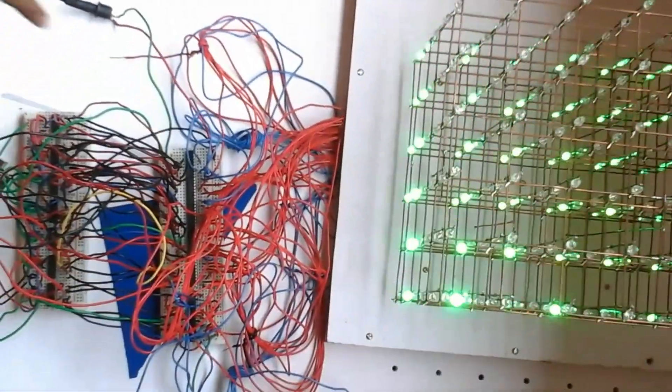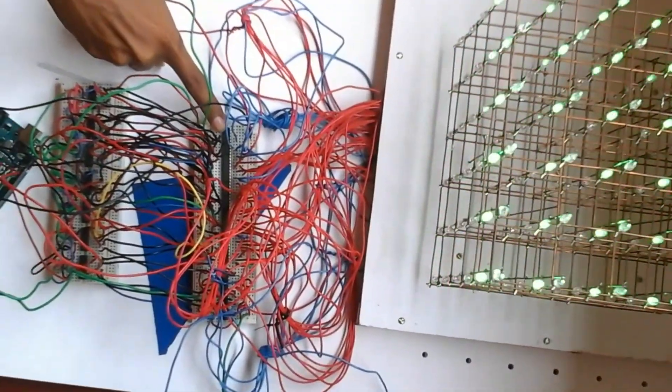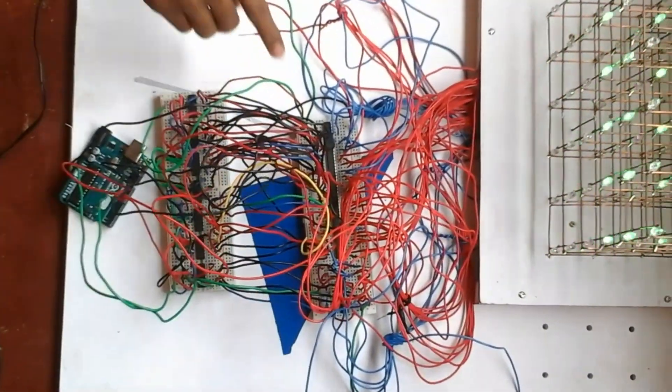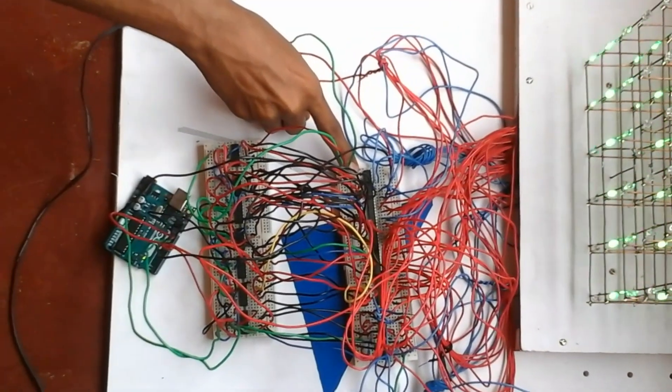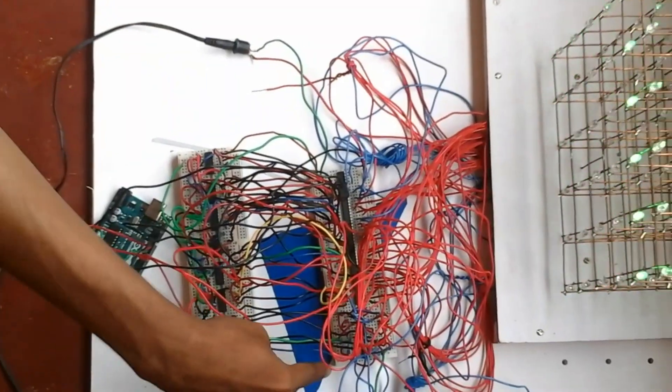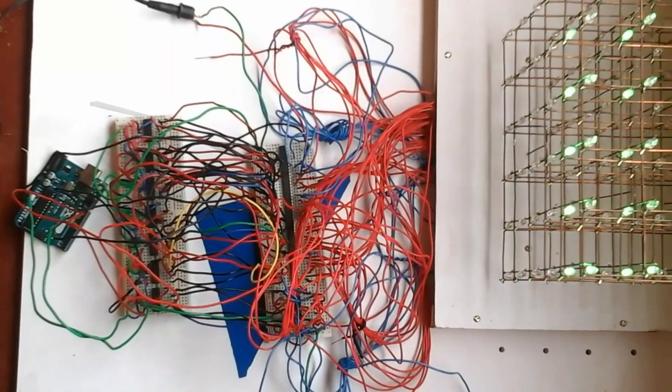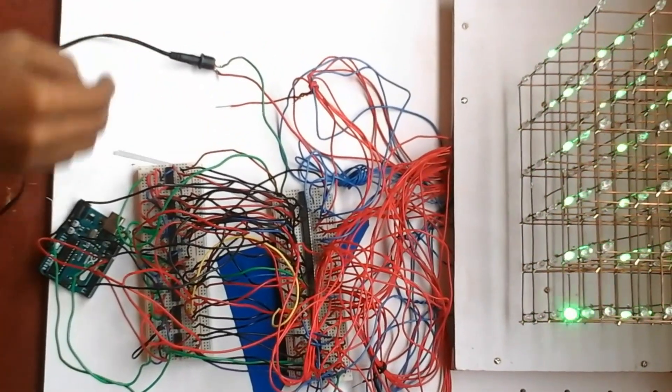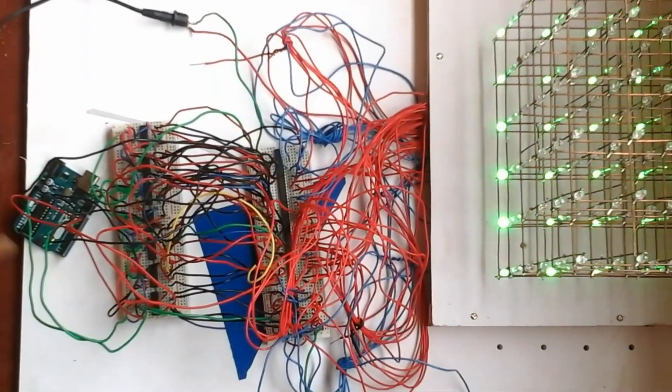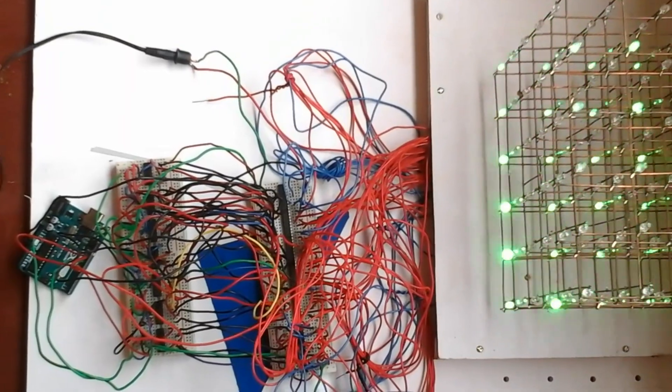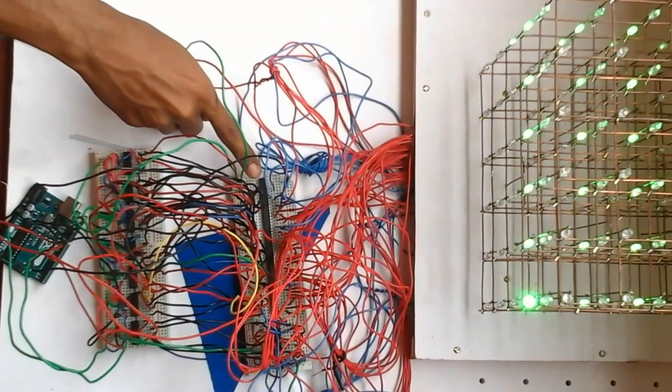Here we are using two kinds of drivers. One is ULN2803 and the other is L293D. We are using five ULN2803 ICs and two L293D ICs. ULN2803 is used to control the cathode terminals and L293D is used to control anode terminals.